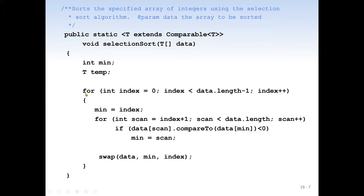We need a for loop to scan through the items. The first for loop gets the starting item — the index starts from zero, goes less than data.length minus one, and increments. In Java, 'length' gives us the size of the array, so if the array has 10 items, length is 10 but indices go from 0 to 9. That's why we have data.length minus one.